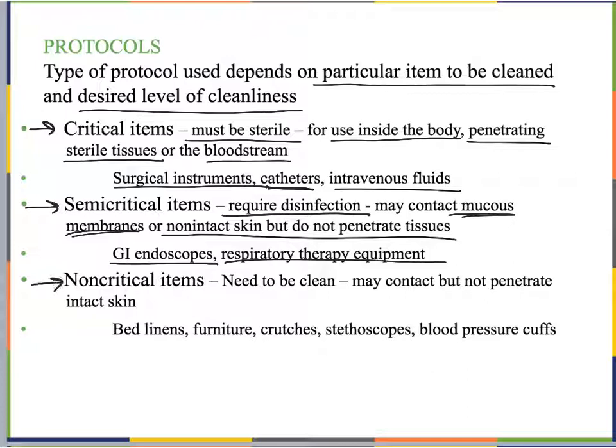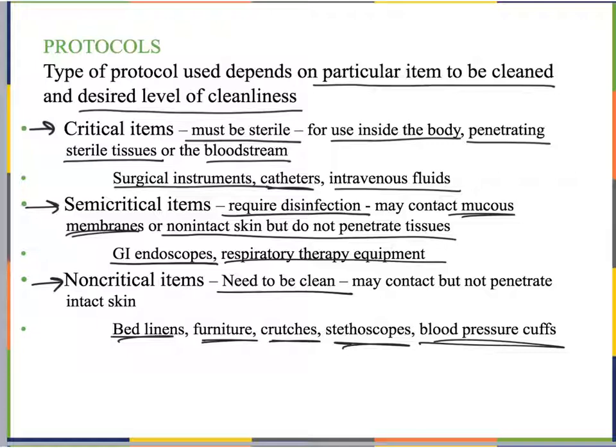Non-critical items are things that just need to be clean — they may contact but not penetrate skin. At hospitals, bed linens and pillowcases don't need to be sterilized; they're just washed like regular laundry. Other examples include furniture in hospitals, crutches, stethoscopes, and blood pressure cuffs. These all touch the surface of the skin, so sterilization processes don't need to be applied to them.